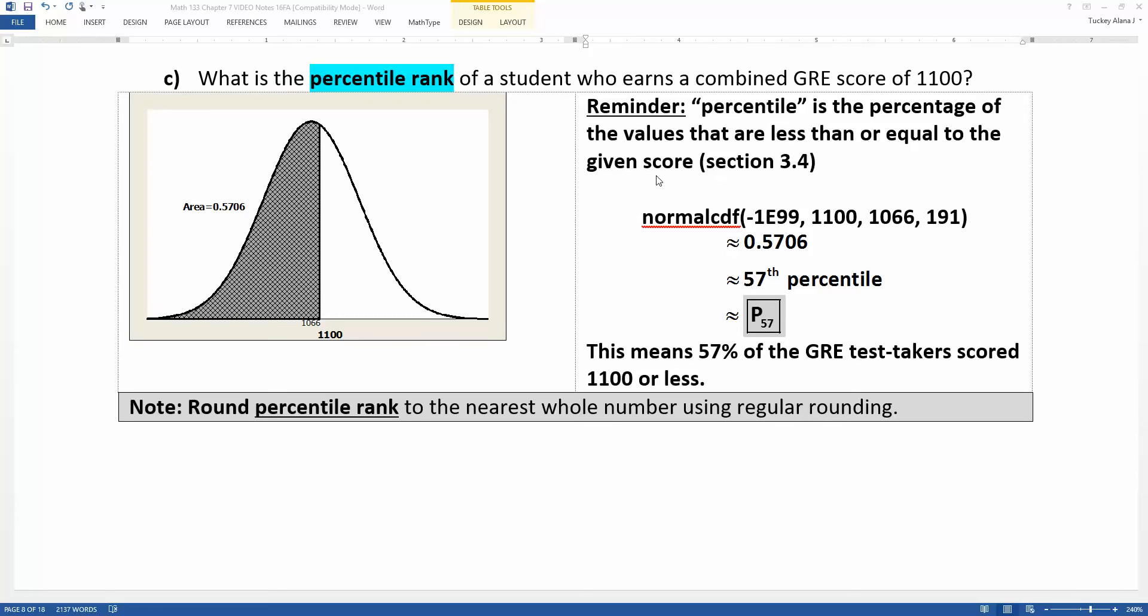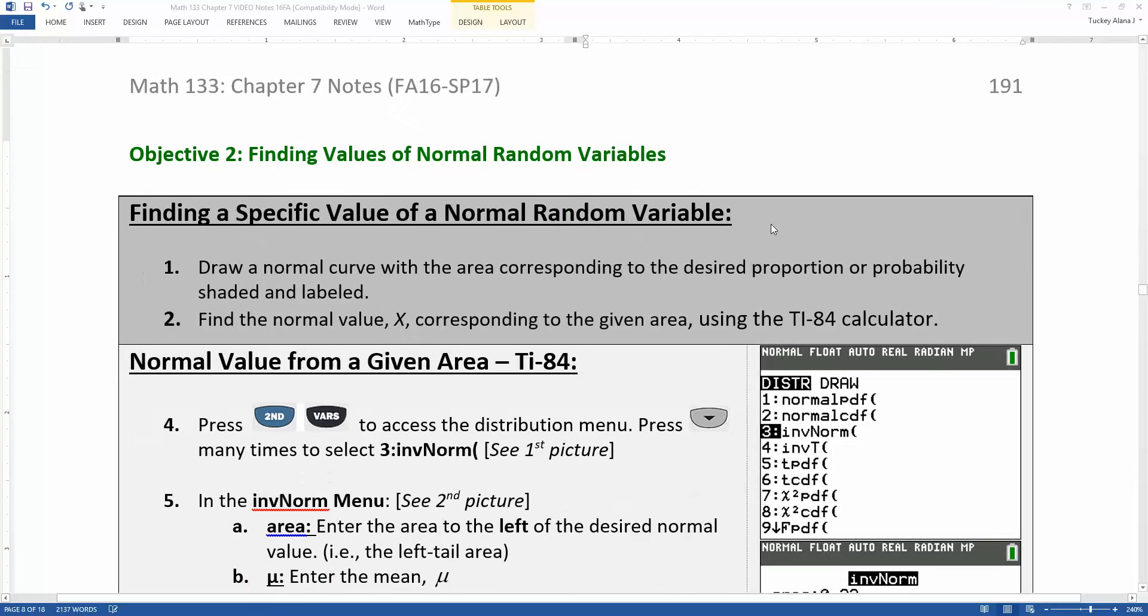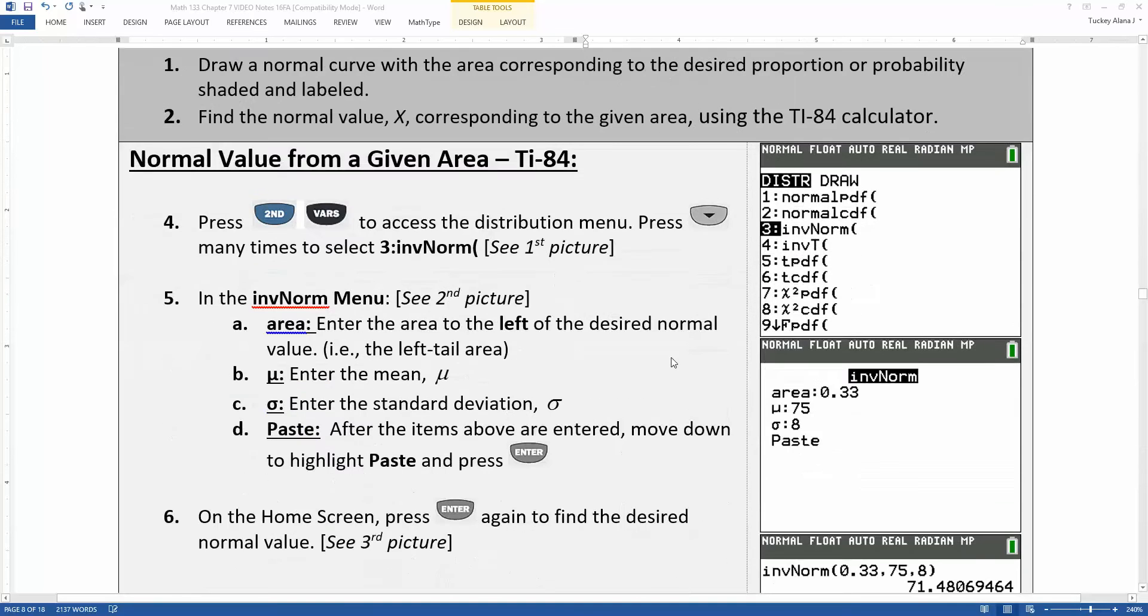In the last video we were given x values like 1100 and asked to find the probability, percentile, proportion, percent, or percentile rank of that value. That was a normal CDF question where you go left comma right comma mu comma sigma. But now we want to invert the process. What if instead of giving you an x-score and asking you for the probability, I give you the probability and ask you for the x-score? That's going to use inverse norm as a function.